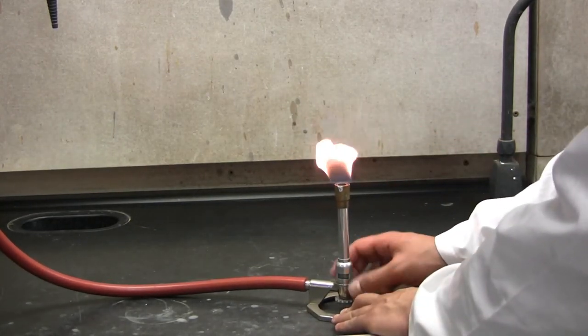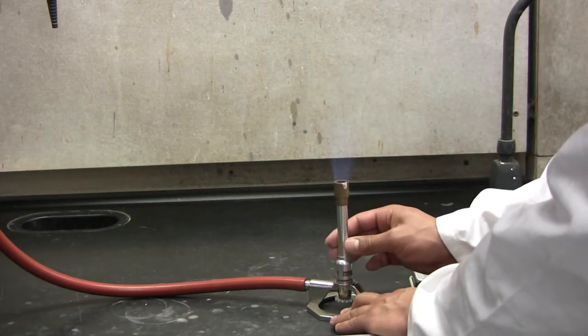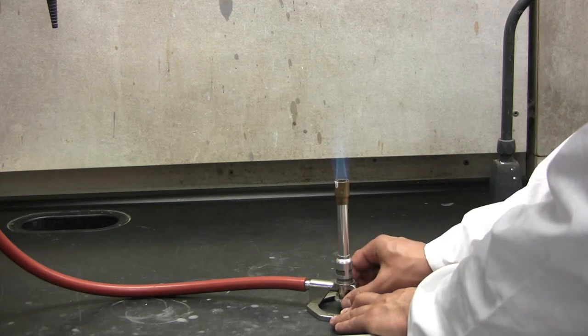Control the height of the flame with the needle valve on the bottom, and the barrel controls the air flow. Rotate this until you get a double cone flame as shown here.